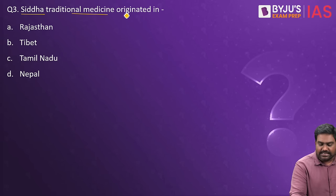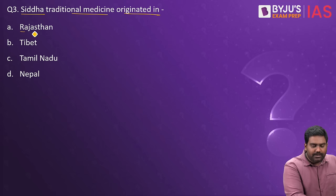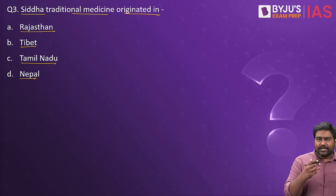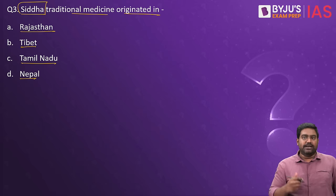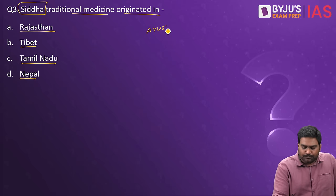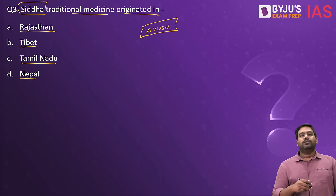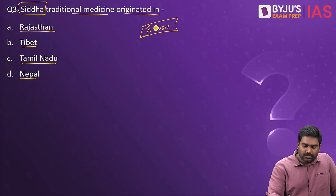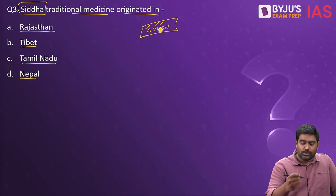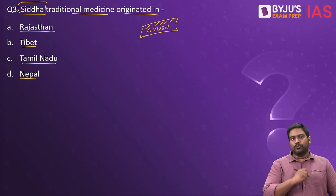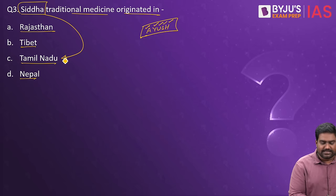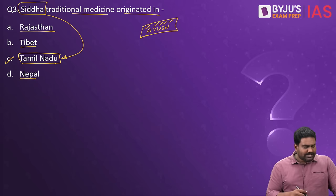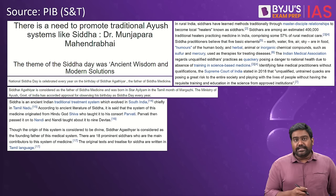Question number three: Siddha traditional medicine originated in which part? Did it originate in Rajasthan, Tibet, Tamil Nadu, or Nepal? Siddha is a type of alternate traditional medicine. You would have heard about the Ayush stream of medicine, which includes all alternate traditional medicinal systems. Here A stands for Ayurveda, Y for Yoga, U for Yunani, S for Siddha, and H for Homeopathy. Siddha traditional medicine system originated in Southern India, specifically in Tamil Nadu.